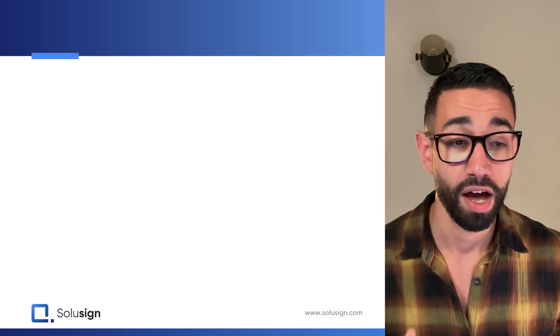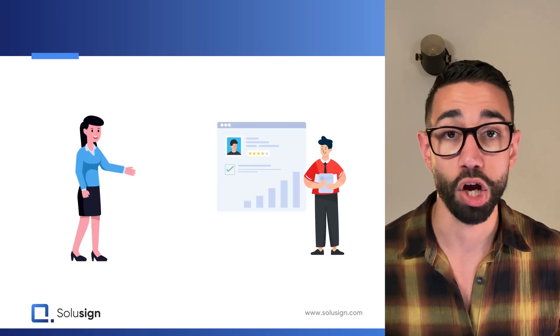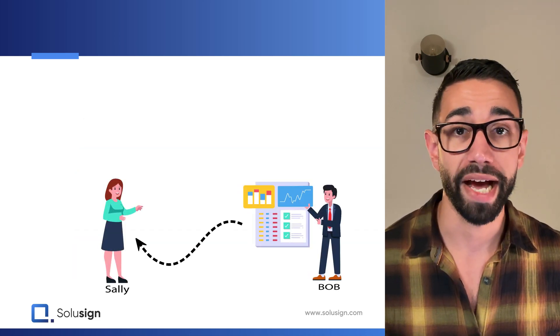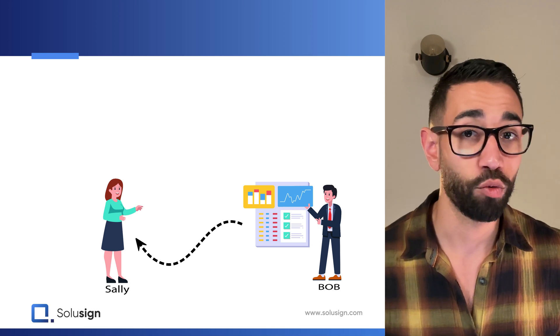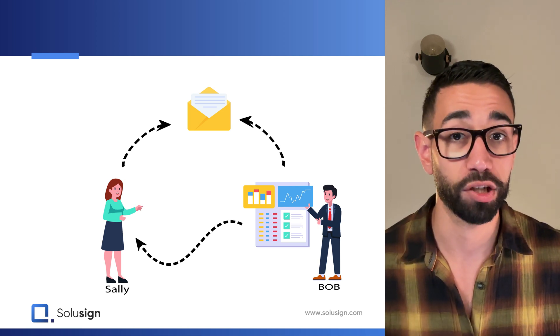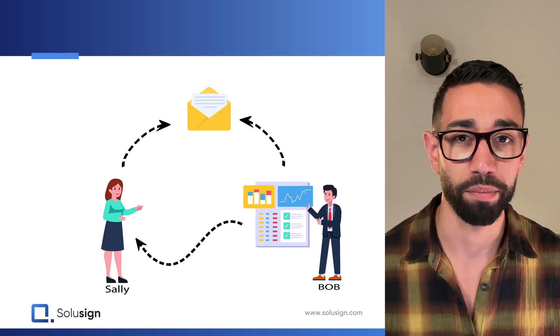Now, let's go back to understanding what DocuSign custody transfer is and how it works. A custody transfer rule automatically transfers the ownership of a user's envelope to another user. An in-flight envelope simply means that it's been sent but has not been completed yet. Custody transfer also helps give access to the envelope to the new user while those envelopes are in flight or after they are completed.